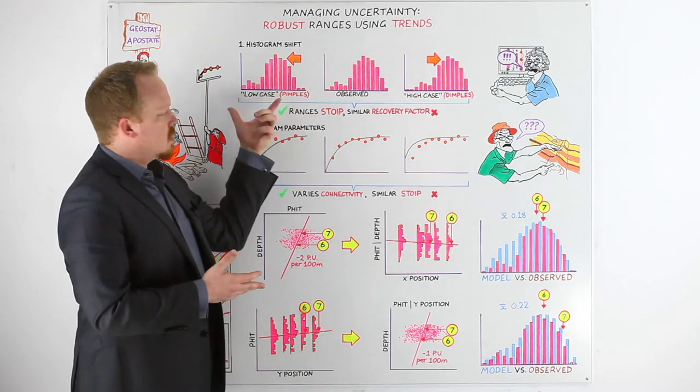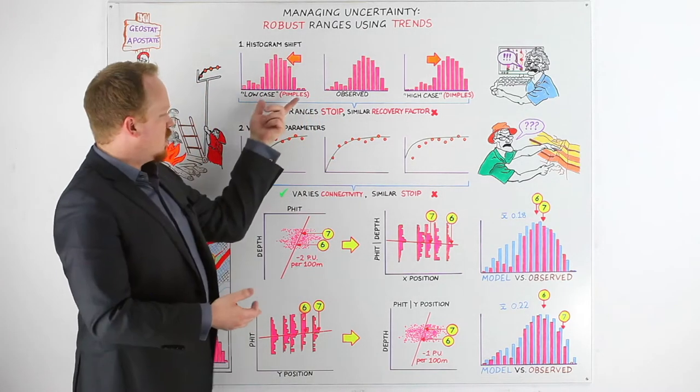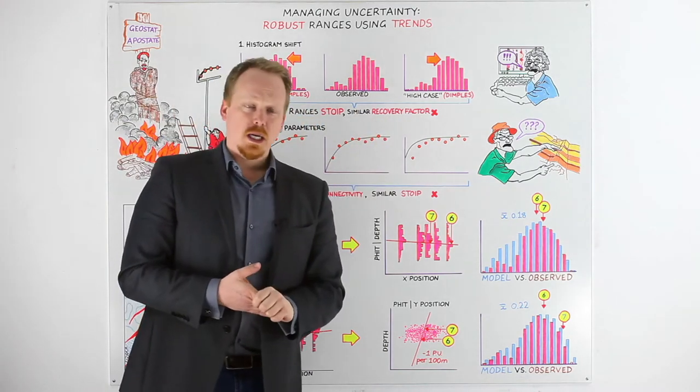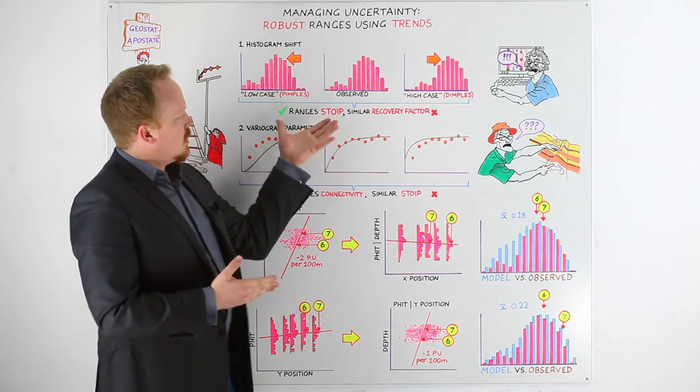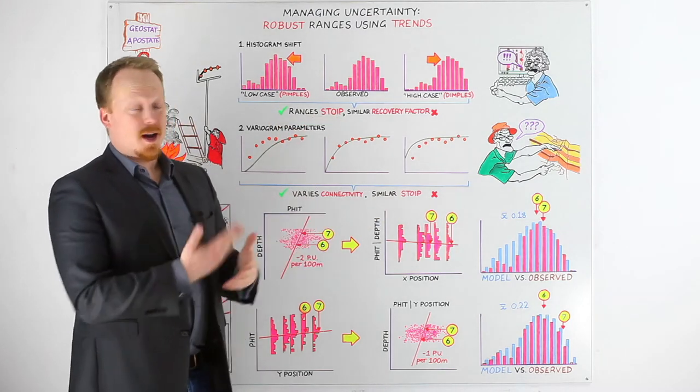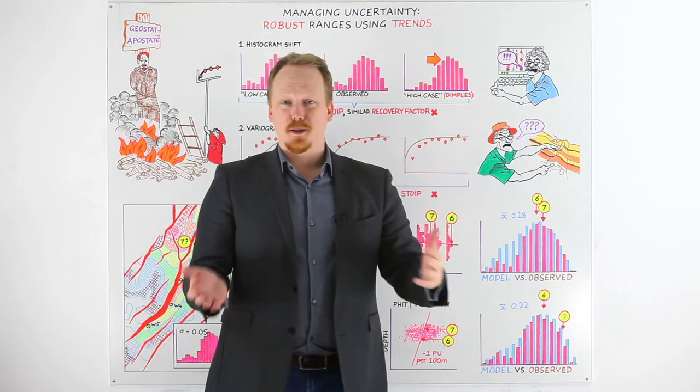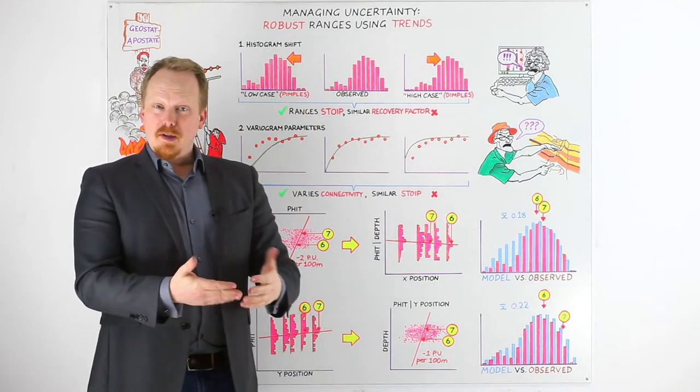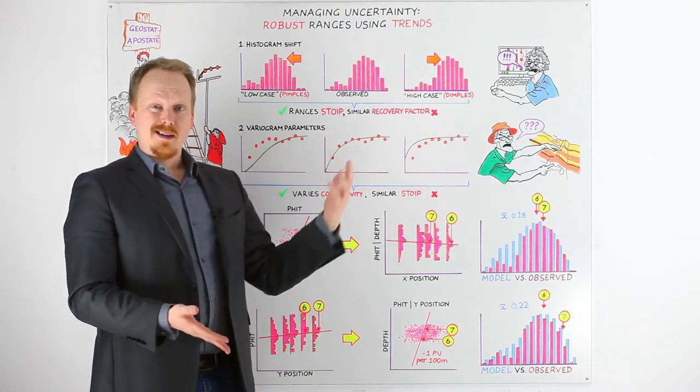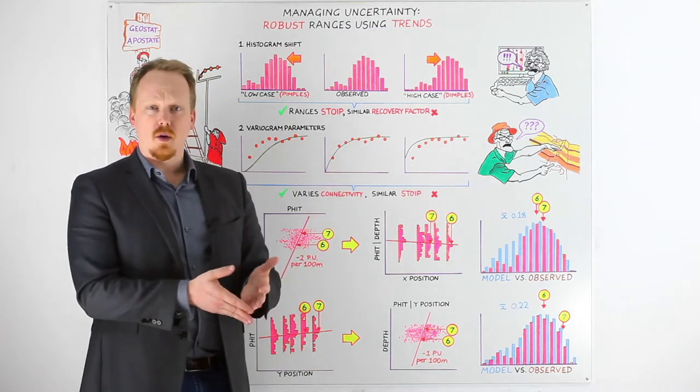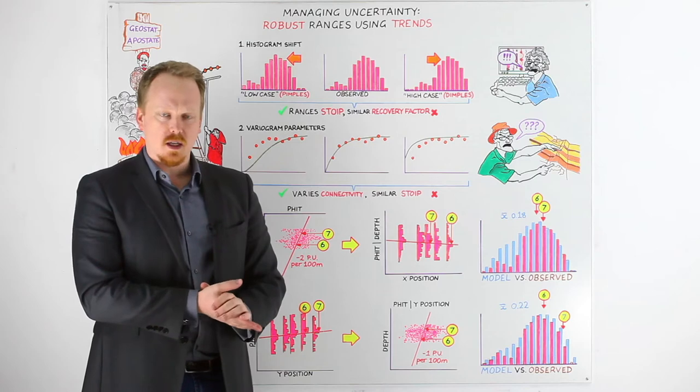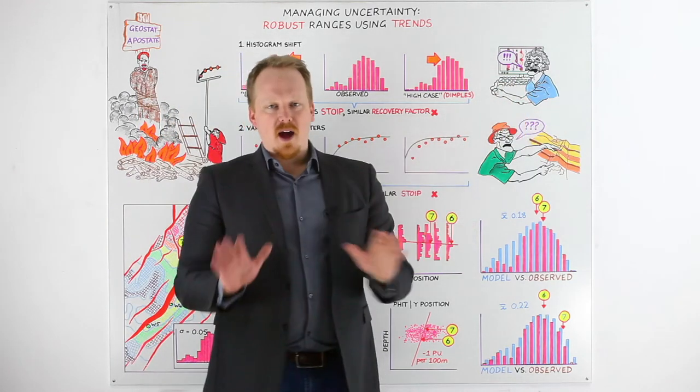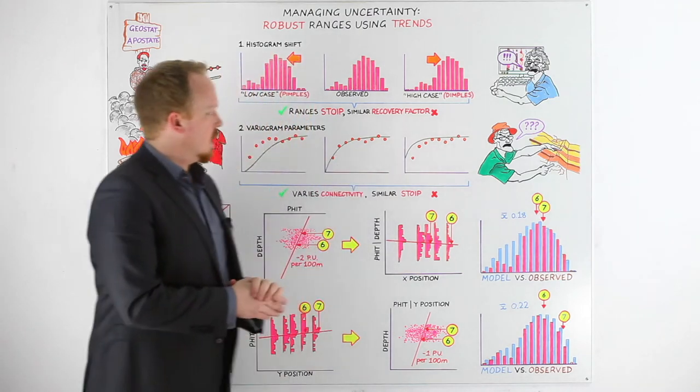When you do just shift the histogram and fit to the same well data, you'll generate pimples and dimples around your wells which is undesirable. But if you shift the observed data as well by saying well the petrophysicist has some uncertainty in their observations, what we're really beginning to invoke is that the greatest degree of uncertainty associated with that is at the wells. And I think we can all agree that the greater degree of uncertainty is away from the wells. There is important uncertainties here but we have bigger ones to deal with upfront.